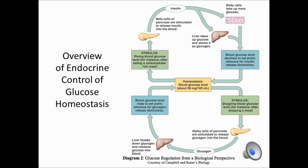If blood glucose falls and becomes too low, then there is another hormone secreted, which is called glucagon. This hormone is secreted from the alpha cells of the islets of Langerhans. It is a gluconeogenic hormone. This hormone also leads to glycogen breakdown in the liver. The end result of both of those processes is the release of glucose into blood, and then this leads again to normalization of blood glucose concentration.